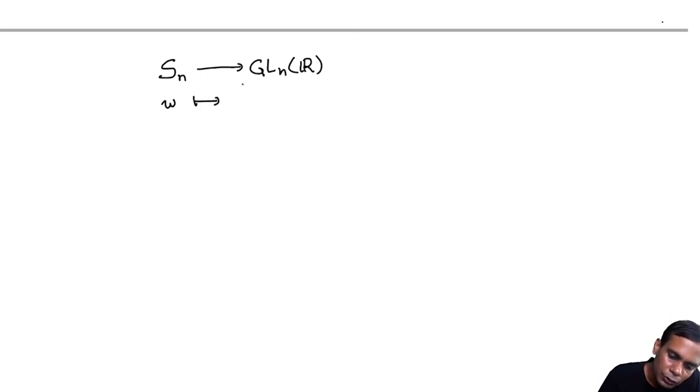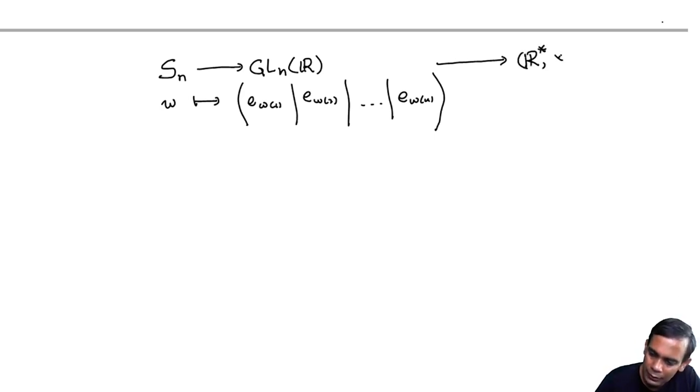What was this thing? The permutation W goes to the matrix with columns EW1, EW2, up to EWn, where EWi is the ith coordinate column vector. And from GLN R to R star, non-zero real numbers under multiplication, we have the homomorphism determinant.